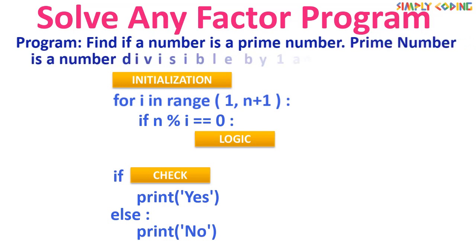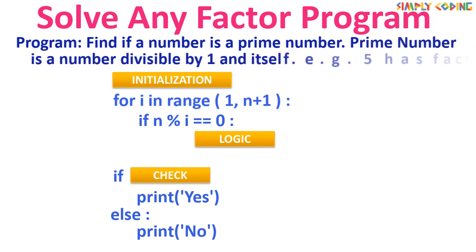Let's first see a simple program where we have to find if a number is a prime number or not. A prime number is a number which is divisible by only 1 and itself, so it has only two factors. For example, 5 is divisible by only 1 and 5.